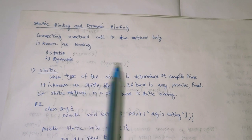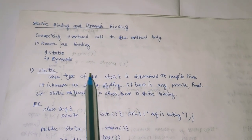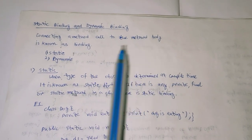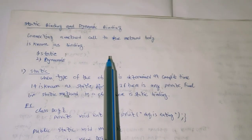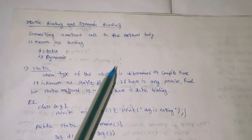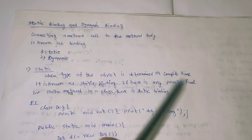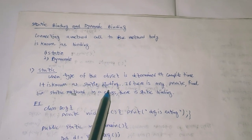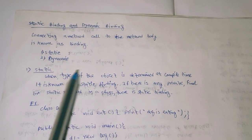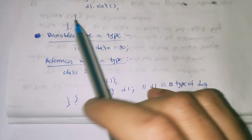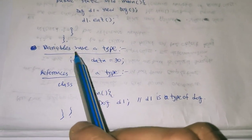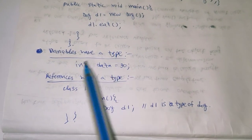When the type of the object is determined at compile time, it is known as static binding. Whenever the object type is resolved by the compiler at compile time, it is static binding. If there is any private, final, or static method in a class, that is a static binding.